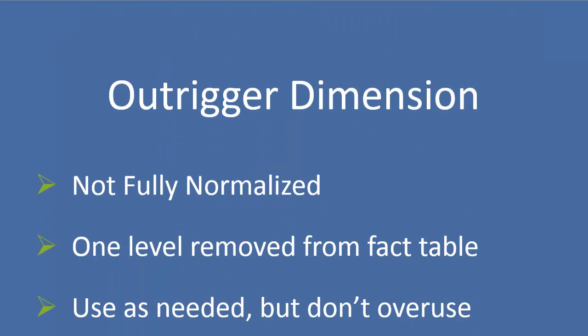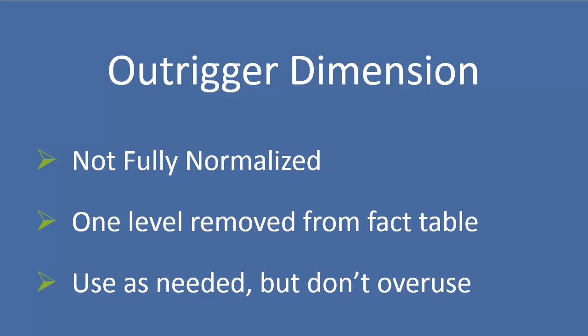So that's a snowflake dimension. Let's talk about outrigger dimensions. Outrigger dimensions are not fully normalized. They're typically just a relationship between two existing dimensions, and they're only one level removed from the fact table.